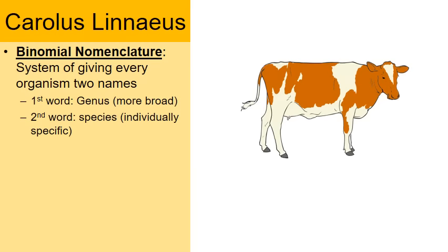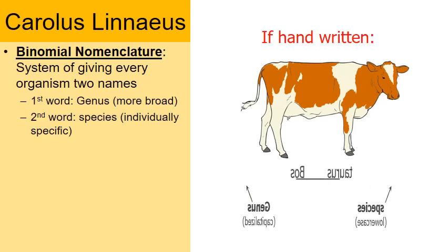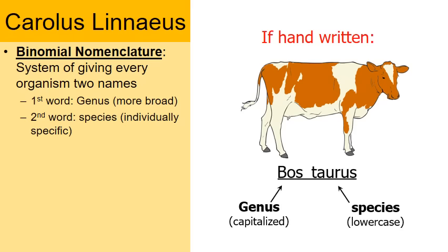Looking at formatting: when typing a binomial name, the genus is capitalized and the species name is lowercased — for example, a cow is Bos taurus in italicized print. If handwritten, the only difference is that both words are underlined instead of italicized, but the genus is still capitalized and the species still lowercased.